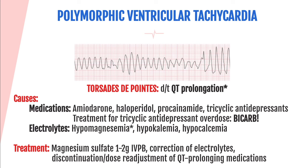Electrolyte imbalances can also cause torsades. Hypomagnesemia is a big one, especially in patients with alcoholism. Hypokalemia and hypocalcemia may also cause torsades. Treatment for torsades is 1-2 grams IV piggyback of magnesium sulfate, then addressing the cause — fixing electrolyte imbalances, discontinuing QT-prolonging medications, or adjusting their dosages.